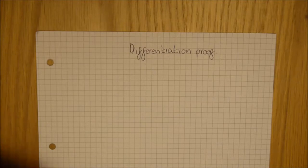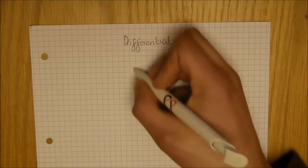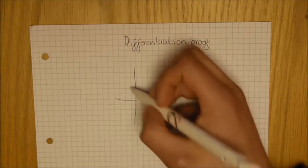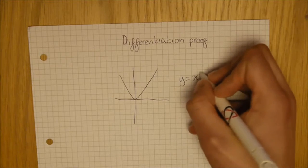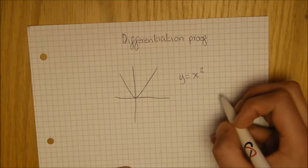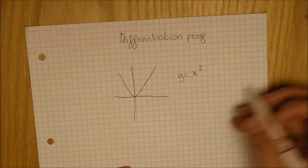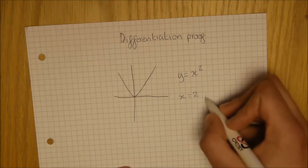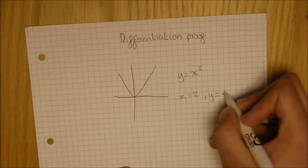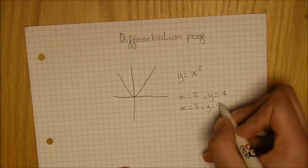So we're going to give an example. We're going to take the curve y equals x squared. Excuse my bad drawing. Now, we know this is the standard parabola you will draw. So you know that if x equals 2, y equals 4, x equals 3, y equals 9.